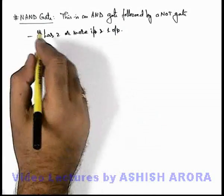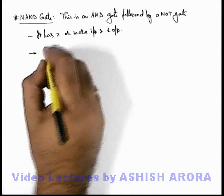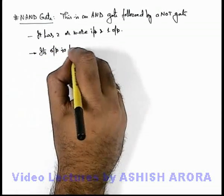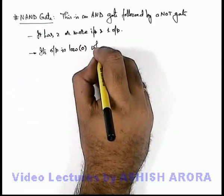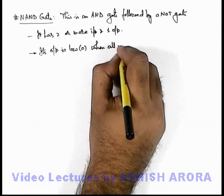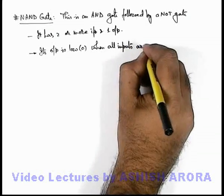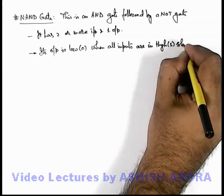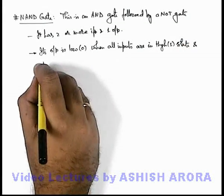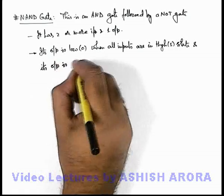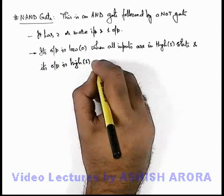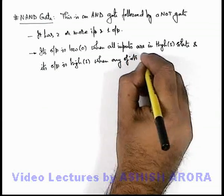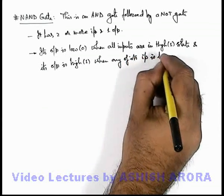The basic function of NAND gate is based on the logic that its output is low, that is in state zero, when all inputs are in high state, that is in 1 state. And its output is high when any of its input is low, that is in zero state.